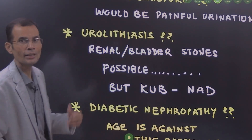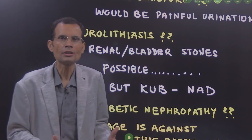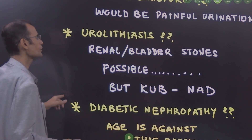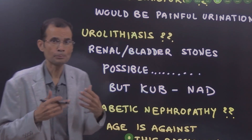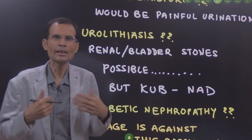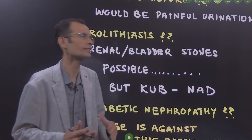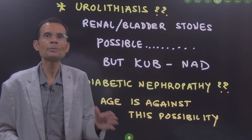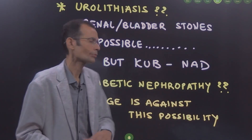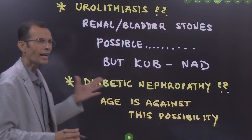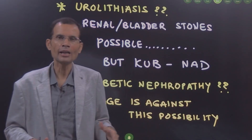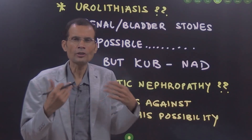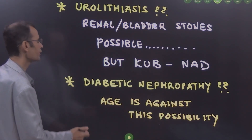Nephrolithiasis or urolithiasis — stones in the kidney or bladder — could possibly cause hematuria, and stones causing infection could explain fever. However, stones were not detected on KUB x-ray. Stones can be radio-opaque or radiolucent, but since stones were not found, let us keep this aside for now.